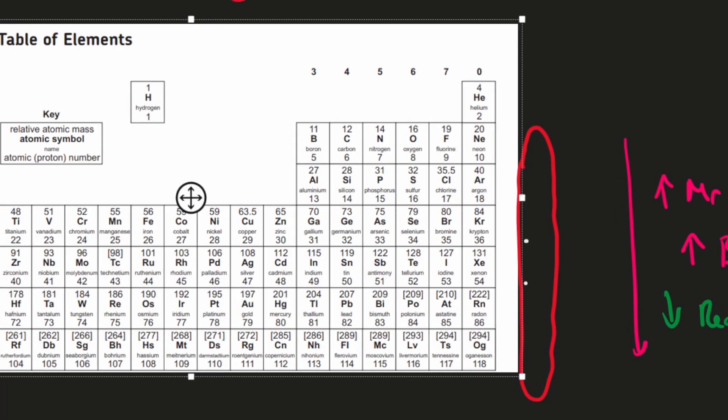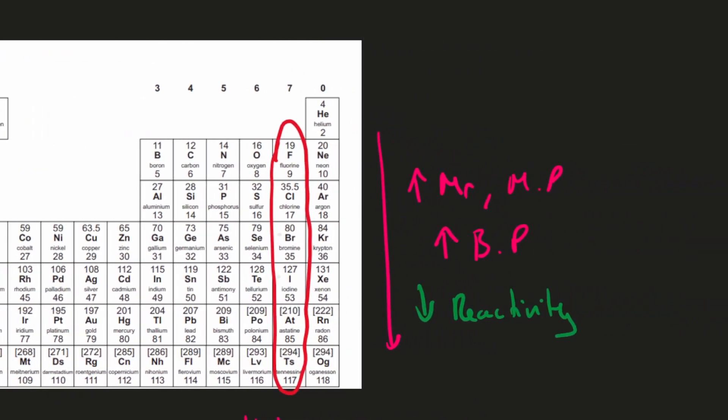But essentially we need to know what happens when you go down the group. We saw already what happens in Group 1, but in Group 7 you see a slightly different trend. As you go down the group, the molecular mass increases, the melting point increases, and the boiling point increases, but the key factor is your reactivity decreases as you go down the group. Let's have a look at why that happens.